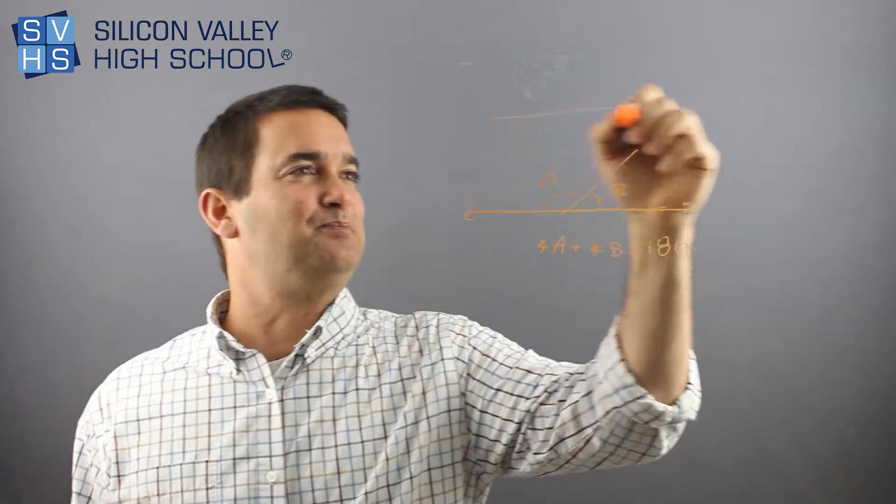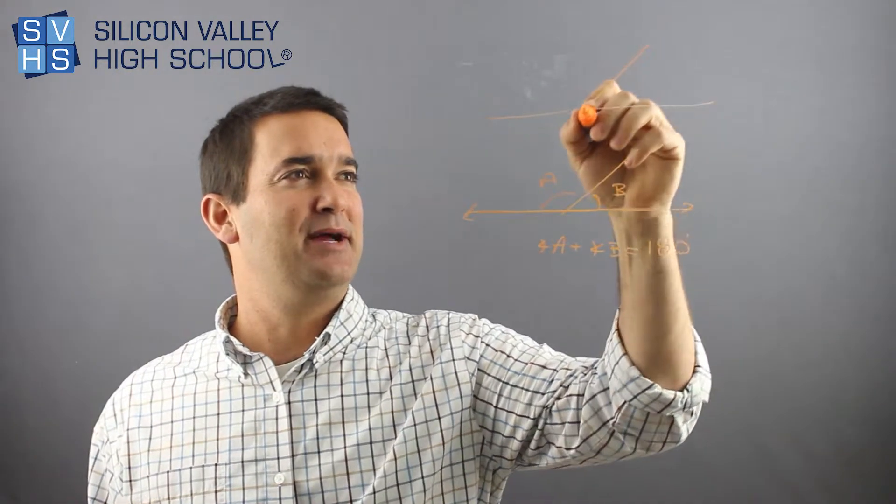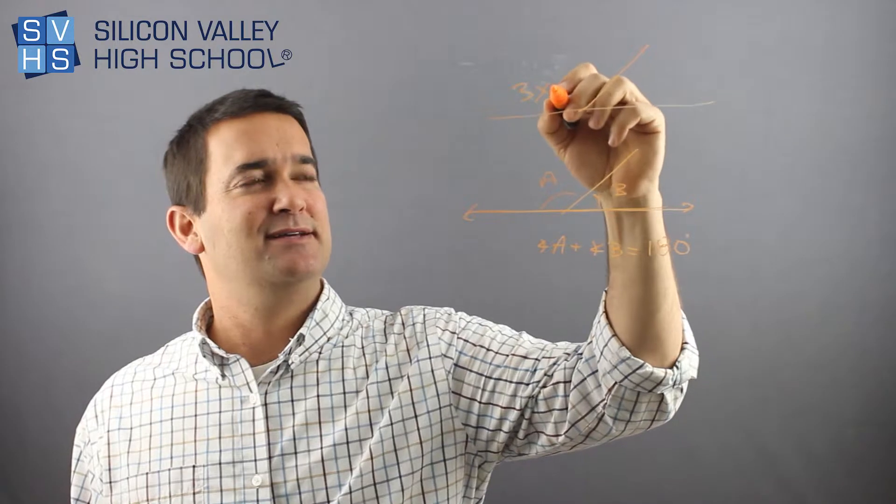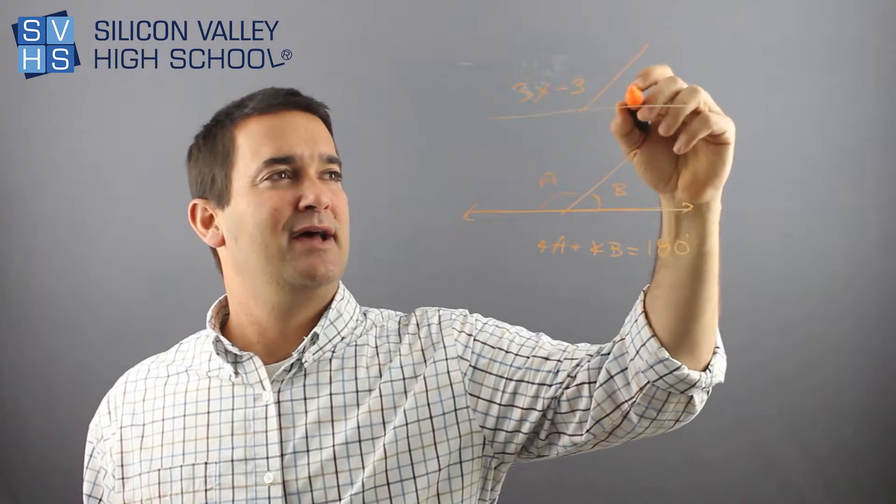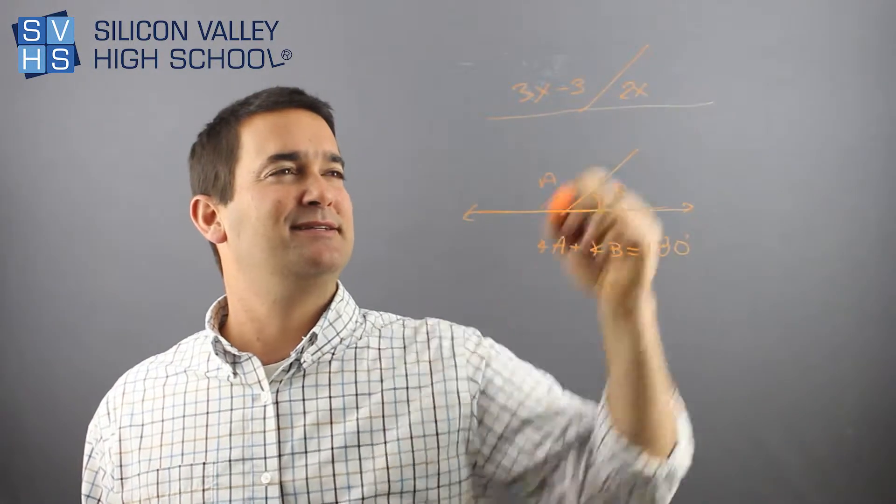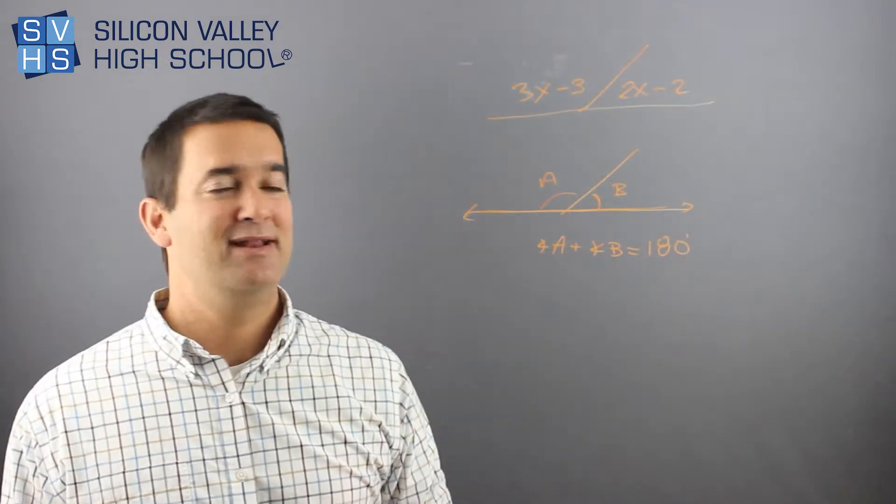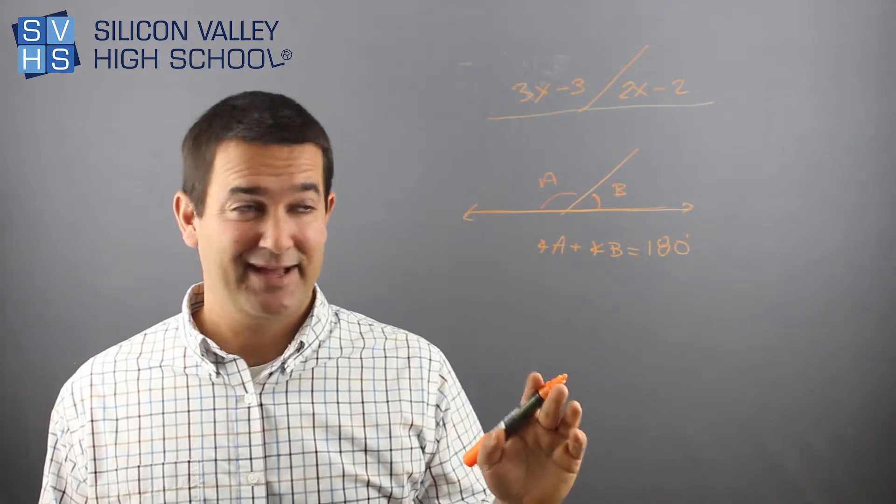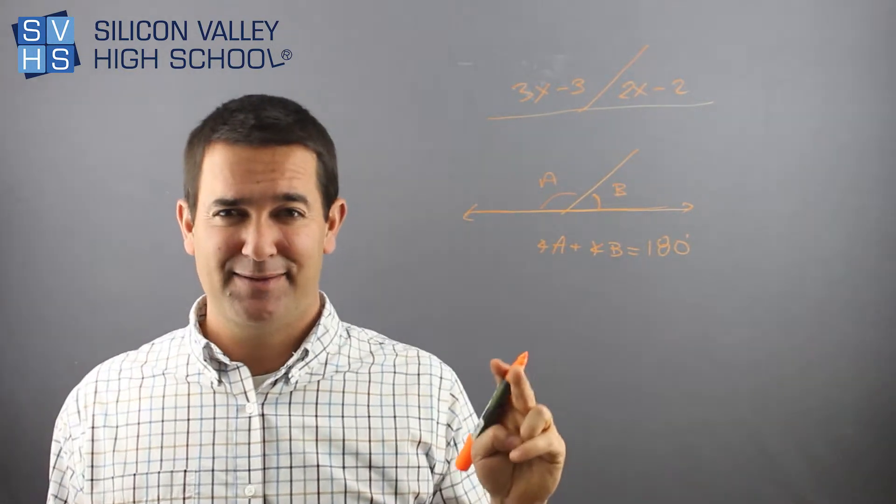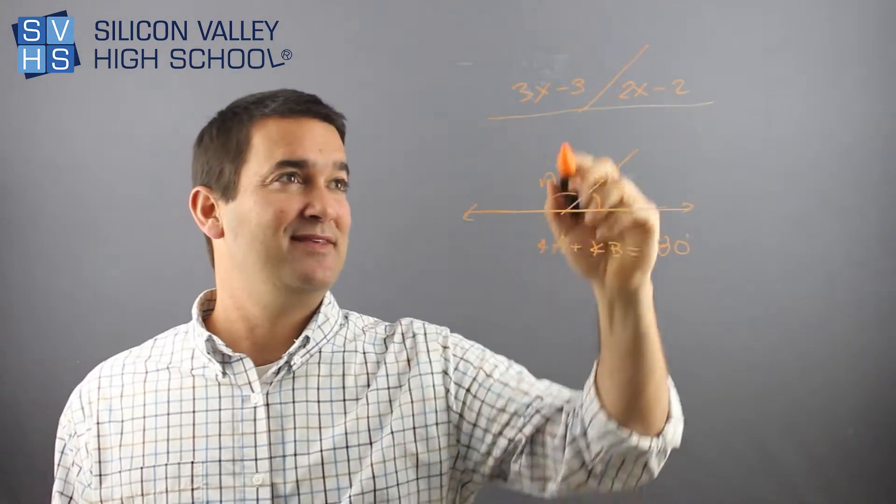So here's a typical one. They'll do something like this. They'll say this is 3x minus 3, and this is 2x minus 2. Solve for x. And I just made this up, I've got to be honest, and I doubt this is going to come out to a whole number, but who cares?